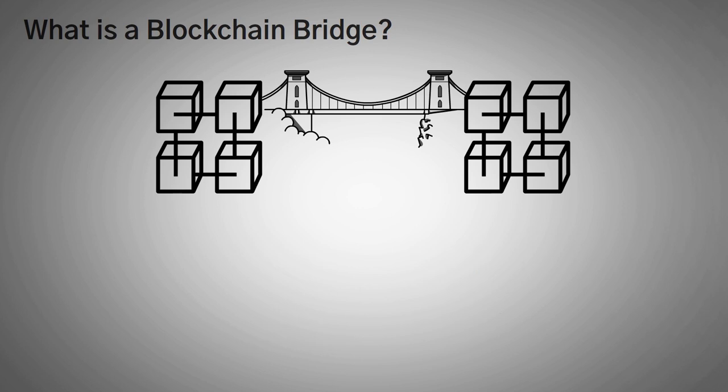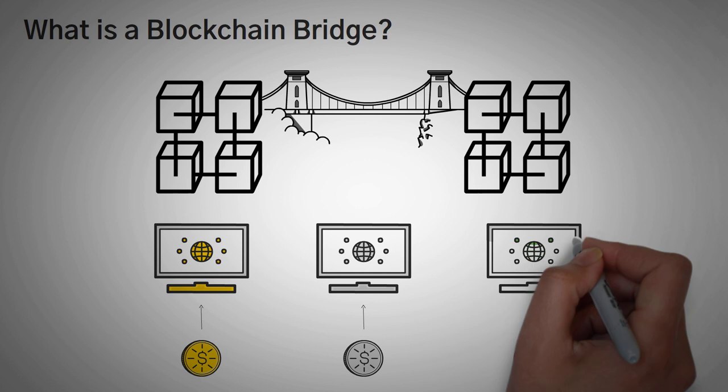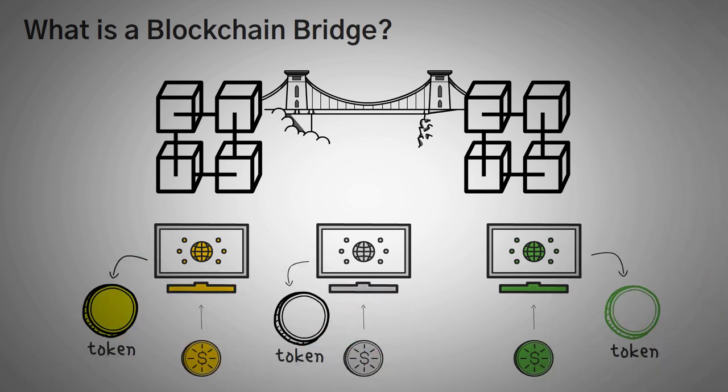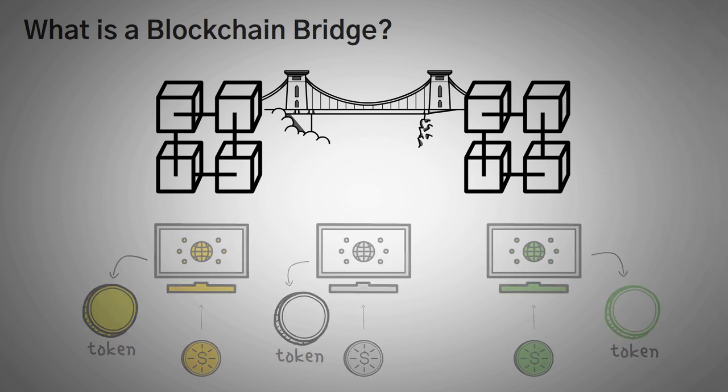Before we get into this, you need to realize something very important. All coins have their own blockchain. Tokens, however, are virtual versions of an asset built on another coin's blockchain.